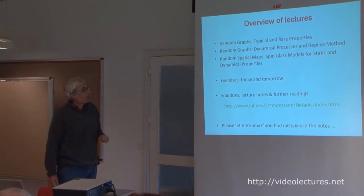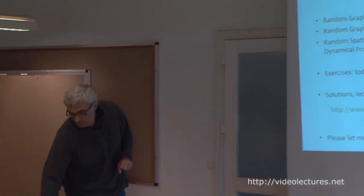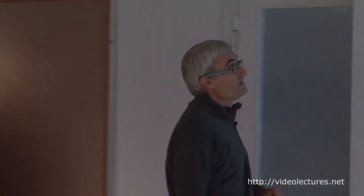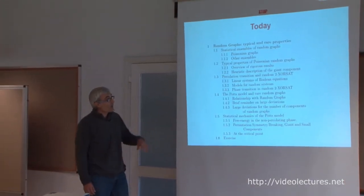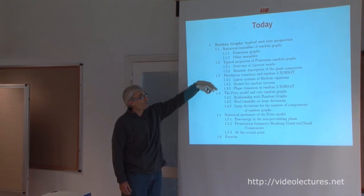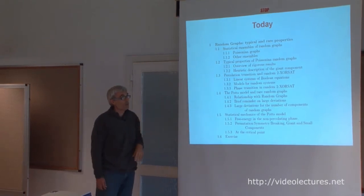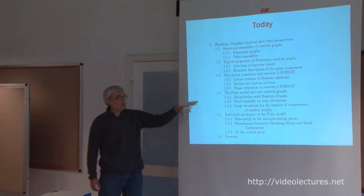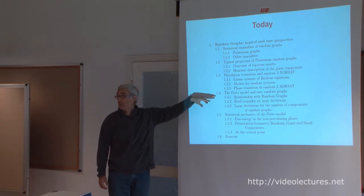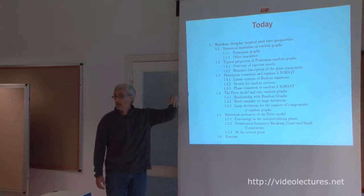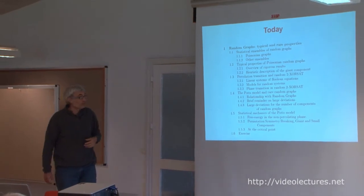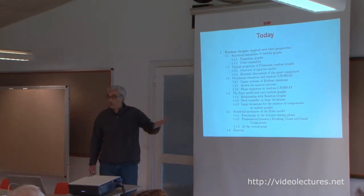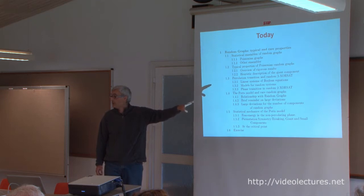What I'm going to tell you more precisely today is: a very short introduction to statistical ensembles of random graphs and a reminder of the basic properties of small and large components. Then I'll illustrate these properties in the special case of the percolation transition in random 2-XORSAT, which I will define later in detail. I'll also show how these properties can be found using statistical mechanics, and how the techniques extend to finite dimensions.